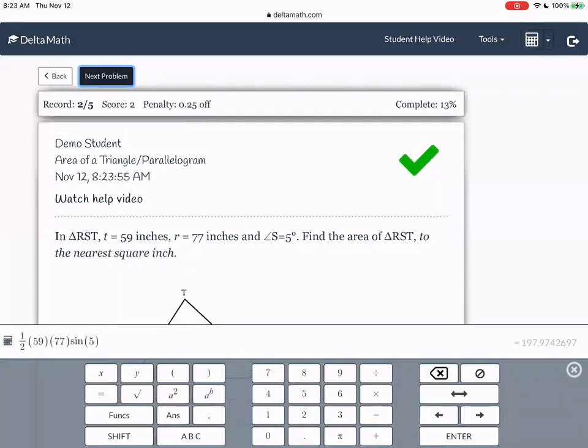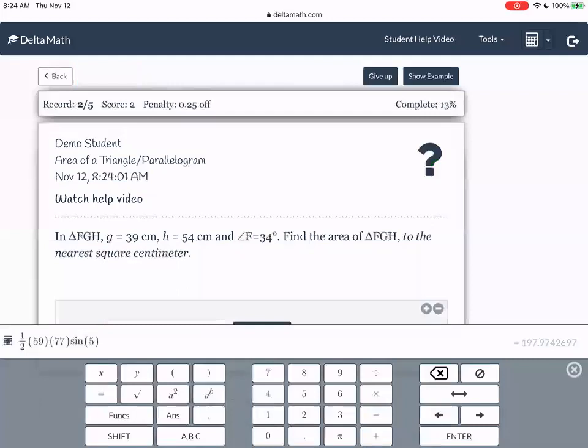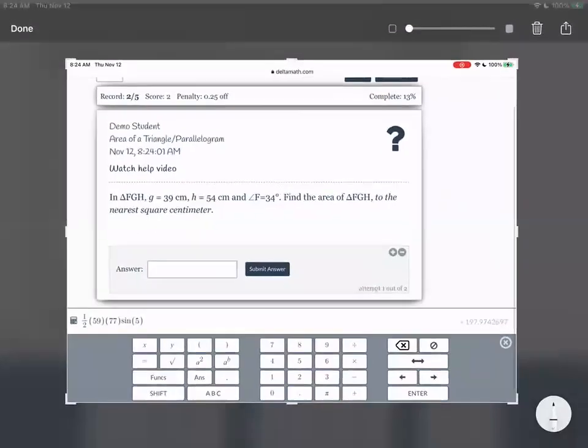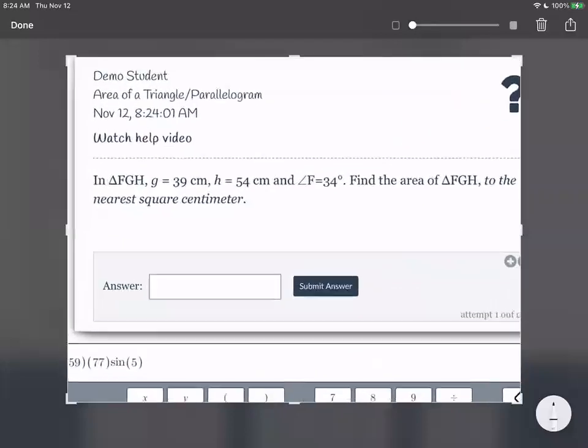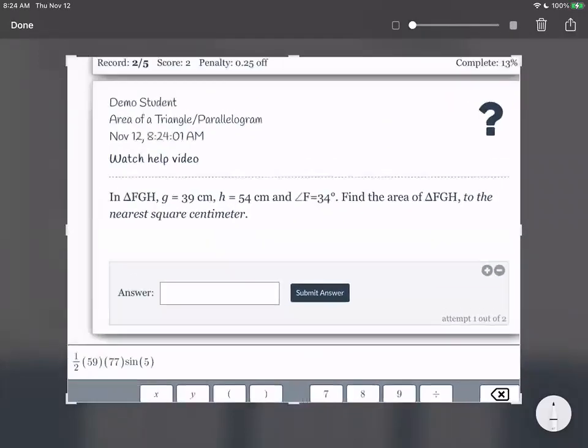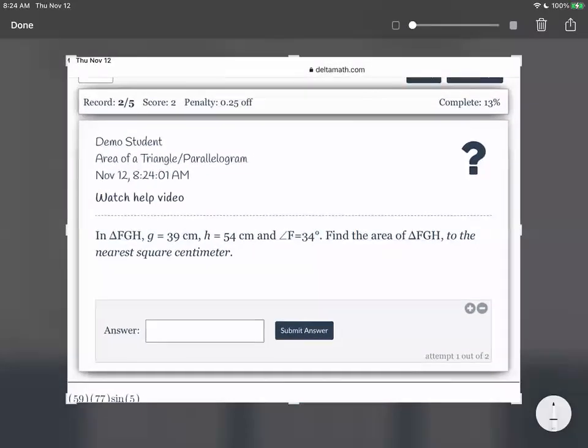I mean, I think this lesson is pretty short. So I'm just going to do one more. Okay. Screenshot. We have triangle FGH. G is 39, H is 54, and F is 34. Wait. Did I read that? Yeah. 39, 54, and 34.